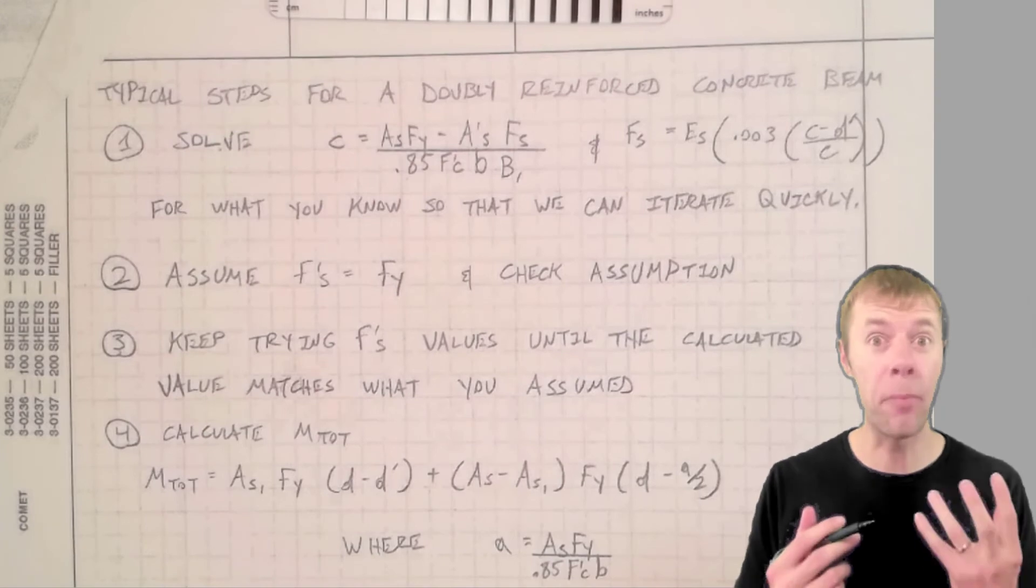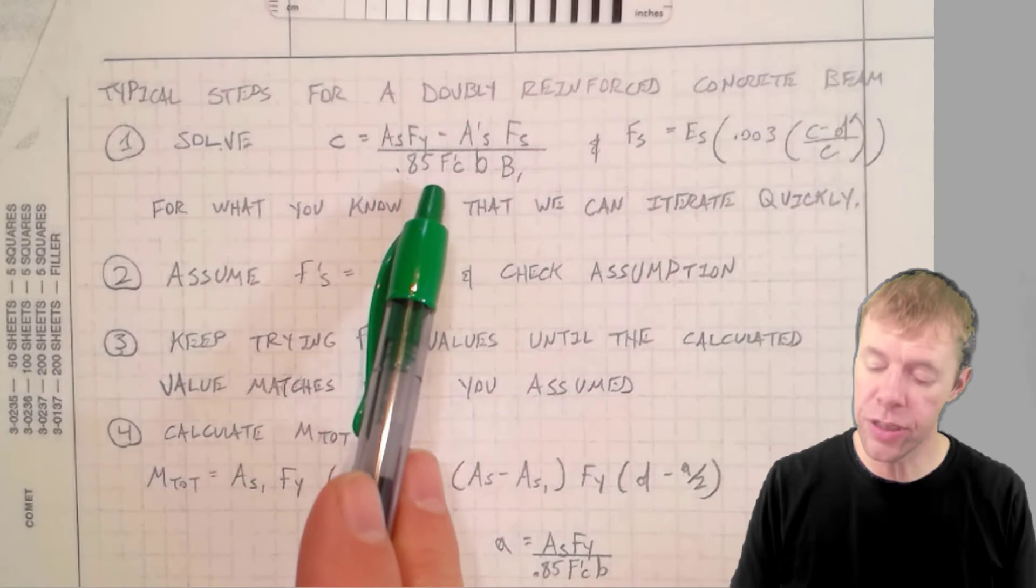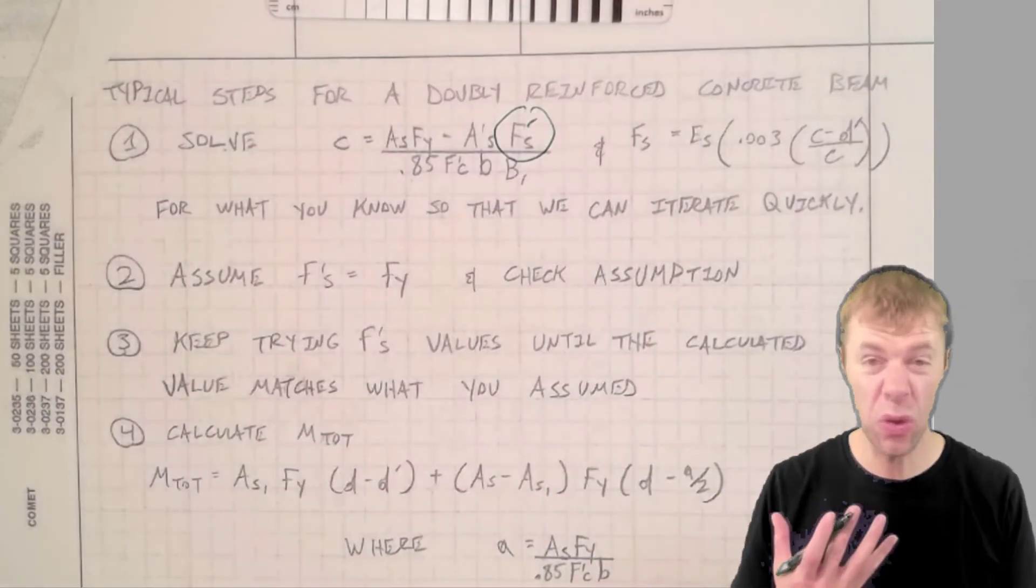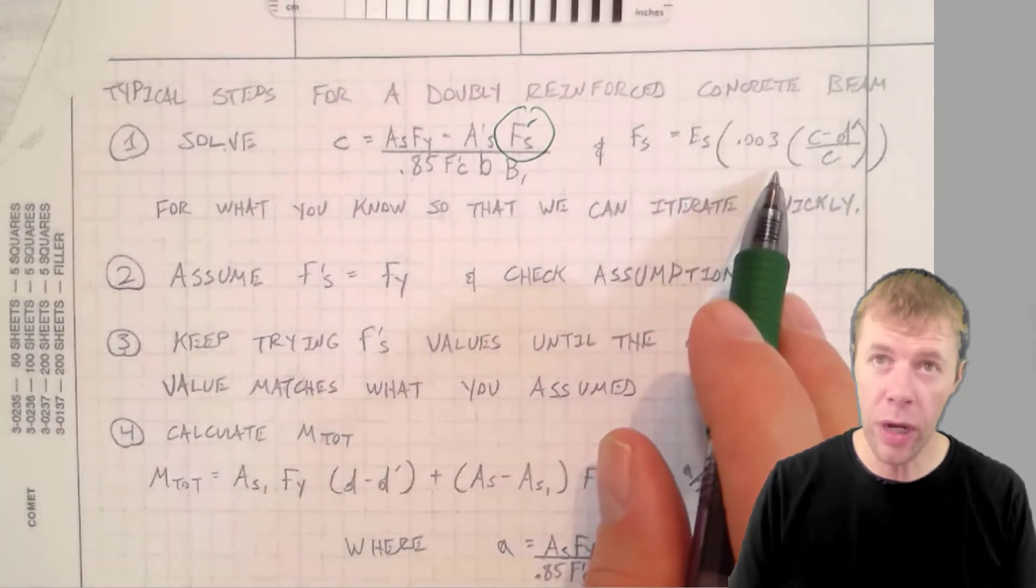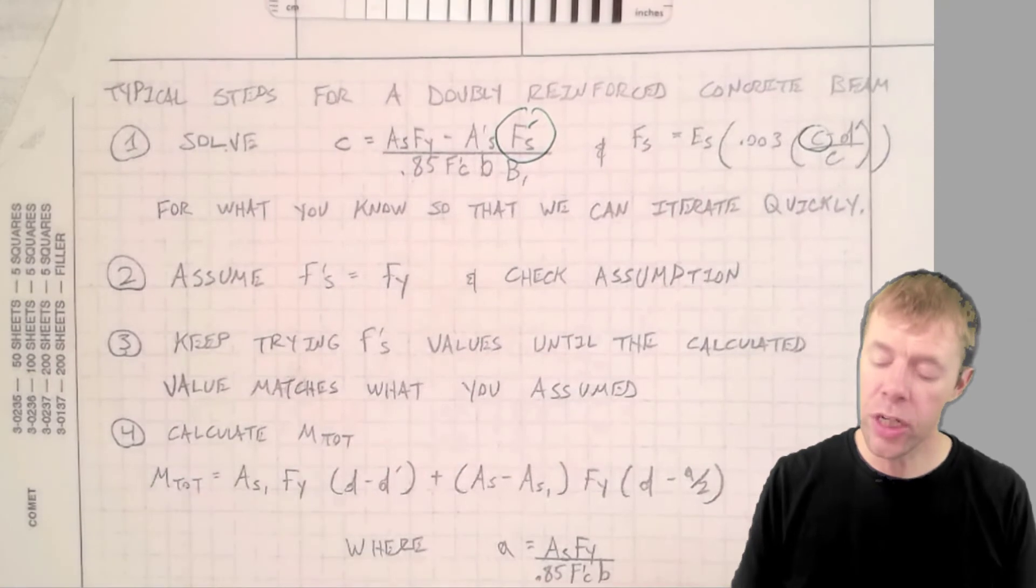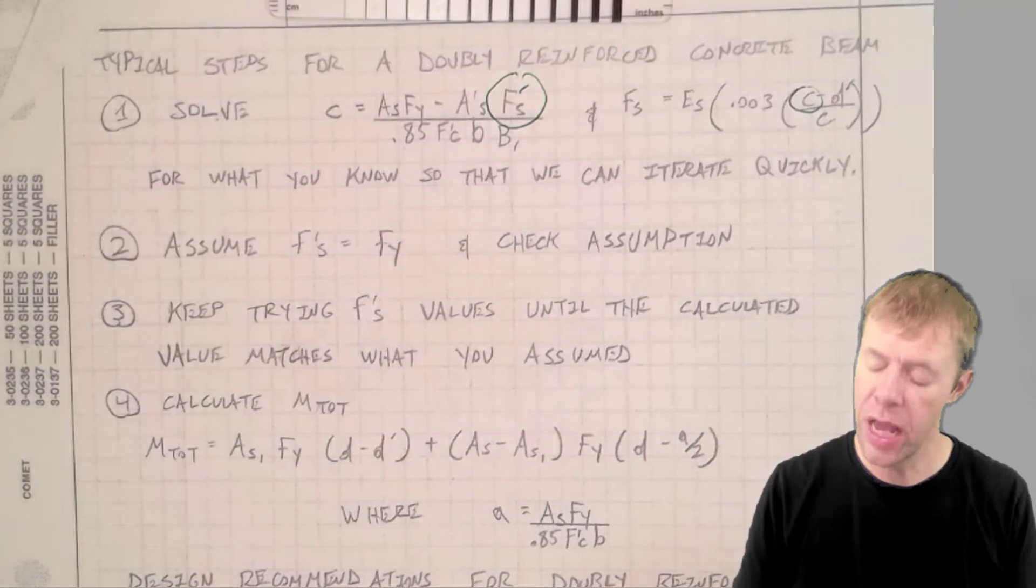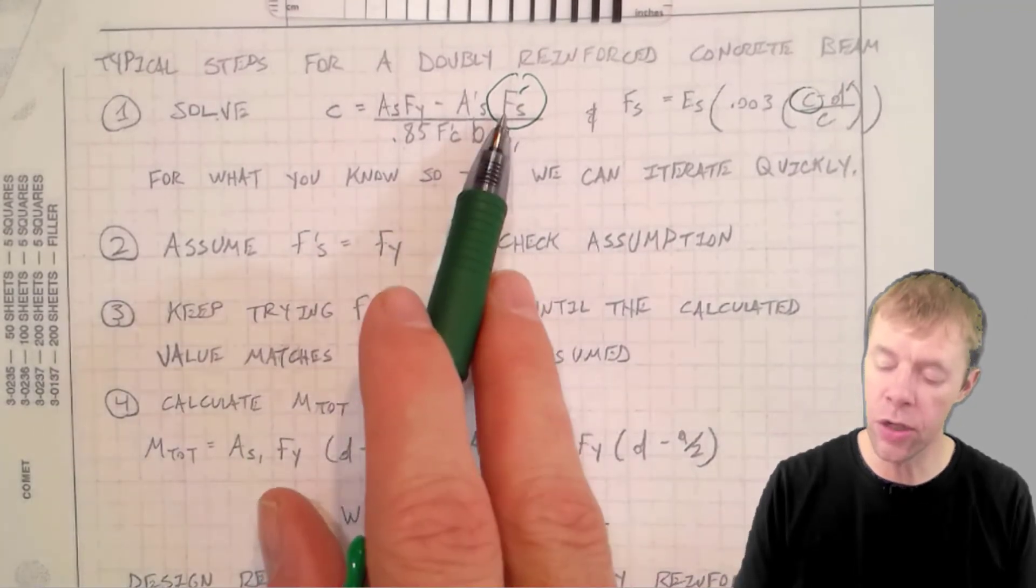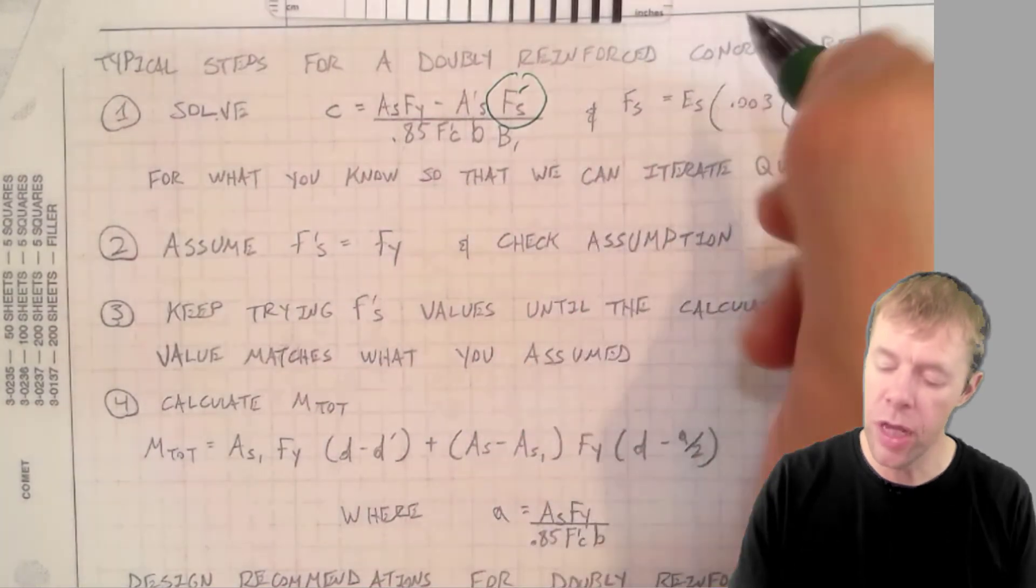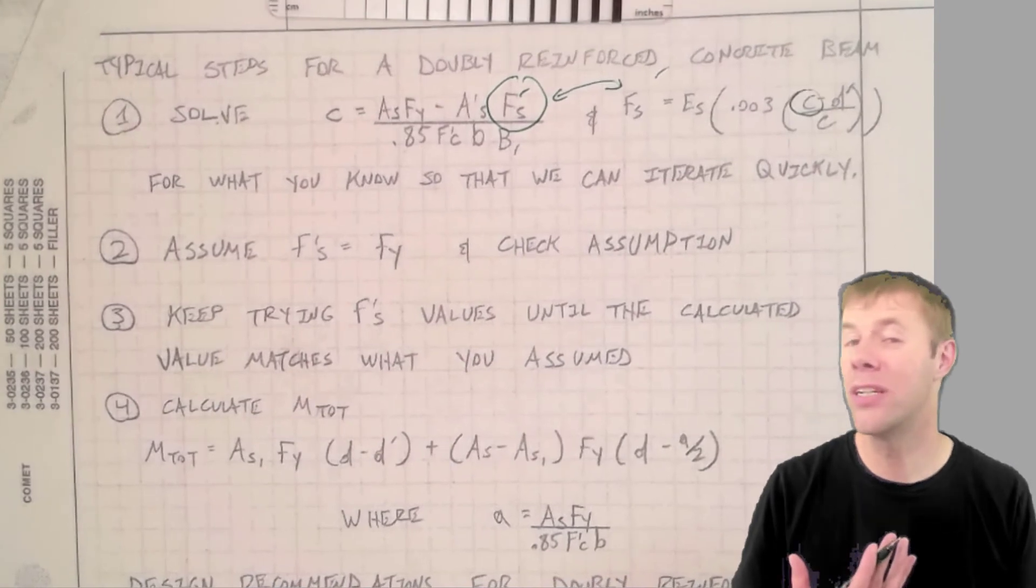As a parting gift, I'm going to leave you this summary of everything we just did. These are the steps. You solve this equation, and we don't know F prime S, so you leave that as a variable. You solve this equation, and we don't know C. You're going to guess an F prime S, usually assume it's FY or another good guess, and then you're going to check it. How do you check it? You put it in here. You solve for a C. You solve this. You get another F prime S. You compare these two to one another.